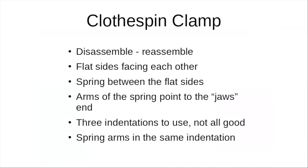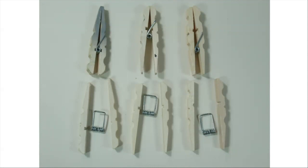To do these clamps, you've got to disassemble the clothespin, turn them inside out, and reassemble. Some people have had a devil of a time, so I came up with these instructions. Keep the flat sides facing each other. Keep the spring between the flat sides. The arms of the spring point to the jaws end of the wooden bars. There are three indentations you can use. Different arrangements don't work as well as others, and remember to put the spring arms in the same indentation.